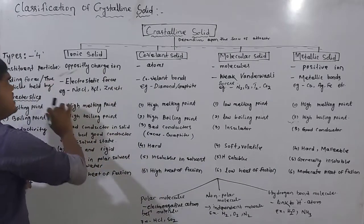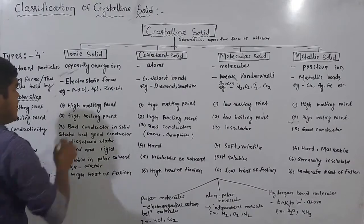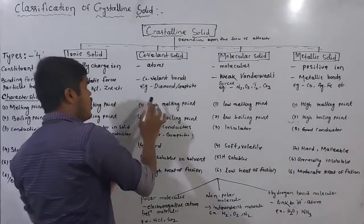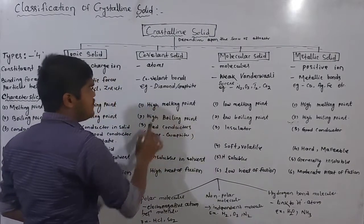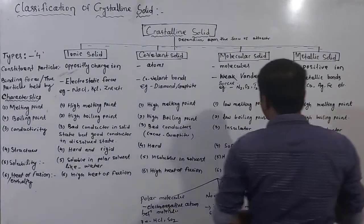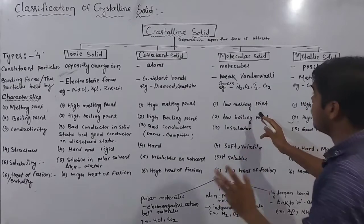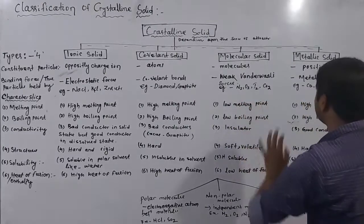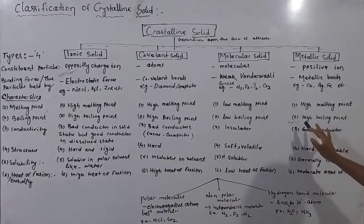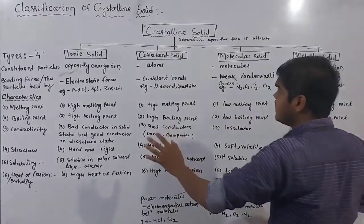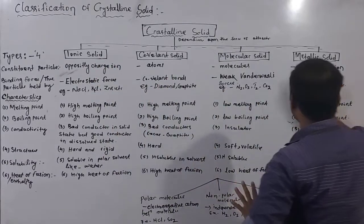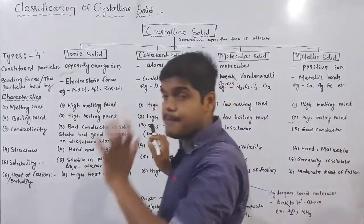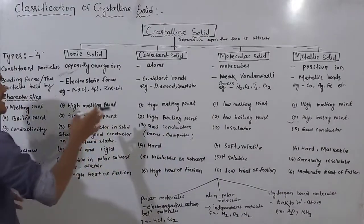If you consider the ionic solid, the ionic solid has a high melting point. Covalent solid also has a high melting point. But molecular solid has a low melting point. The metallic solid has a high melting point. So only molecular solid has a low melting point — all others have high melting points.